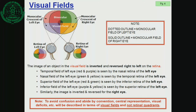Similarly, the image is inverted and reverted for the right eye. To summarize: the image of an object in the visual field is inverted and reverted right to left on the retina. The temporal field of the left eye is seen by the nasal retina of the left eye, while the nasal field of the left eye is seen by the temporal retina of the left eye. The superior field is seen by the inferior retina, and the inferior field by the superior retina. Similarly, the image is inverted and reverted for the right eye.